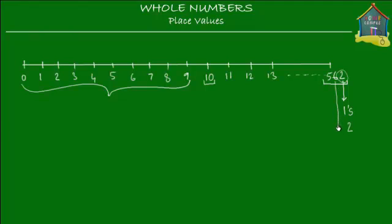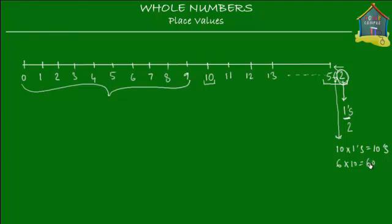But this 6, on the other hand — the value of this 6 is not 6. It's placed in a position that's 10 times higher than this 2. So if this 2 is in the 1's place, the digit to its left is in 10 times the 1's place, which we call the 10's place. So the digit in the 10's place has a value of 6 times 10, which is 60. It doesn't have a value of 6 — it has a value of 60.